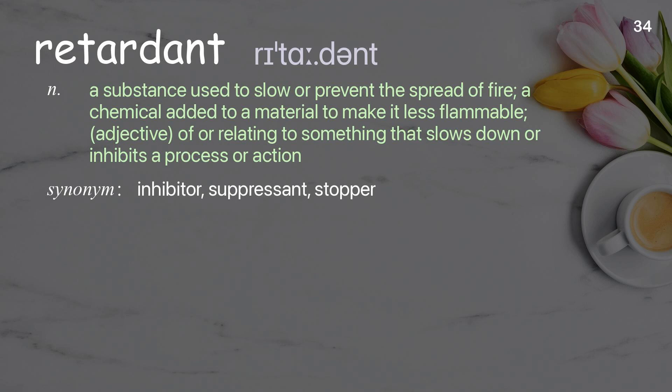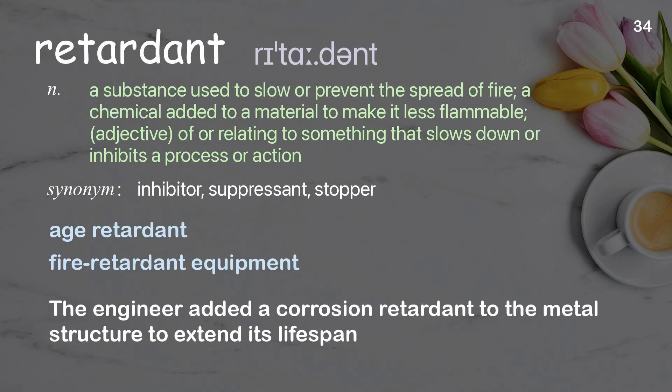Retardant: a substance used to slow or prevent the spread of fire; a chemical added to a material to make it less flammable. As an adjective: relating to something that slows down or inhibits a process or action. Examples: age retardant, fire retardant equipment. The engineer added a corrosion retardant to the metal structure to extend its lifespan.